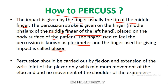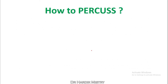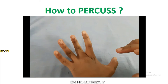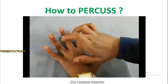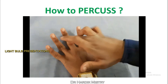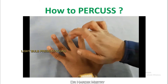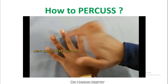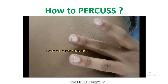Percussion should be carried out by flexion and extension of the wrist joint of the plexor only, with minimum movement of the elbow and no movement of the shoulder. You only have to do the percussion movement by movement of the wrist joint. The finger that touches the body surface of the patient is the pleximeter, and the finger by which we give the impact is the plexor.